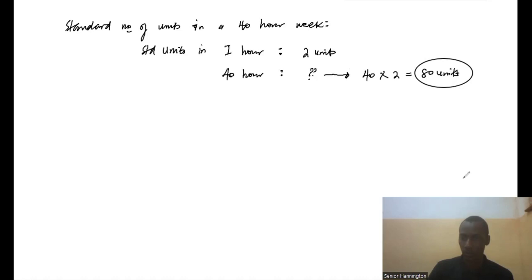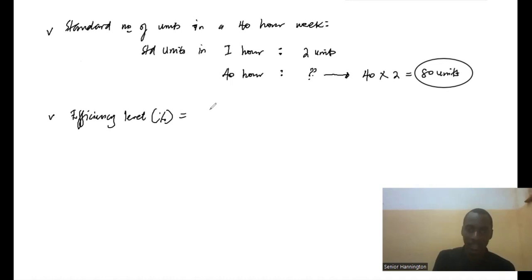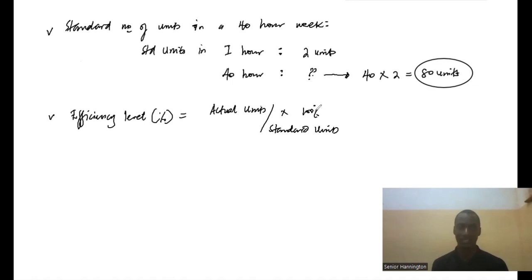To calculate the efficiency level in percentage terms, we use the formula: actual units divided by standard units, multiplied by 100%. Let us now apply this for each worker starting with worker X.